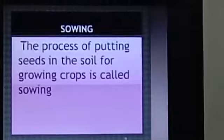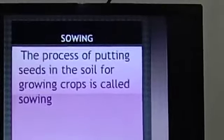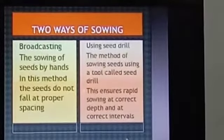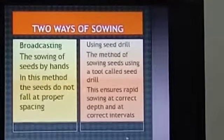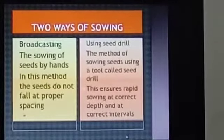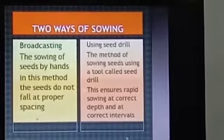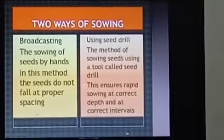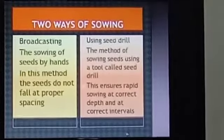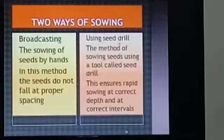Number one is broadcasting, or simply scattering by hands. In this method, seeds do not fall at proper spacing. That means in some places there will be more number of seeds and in some places very less number of seeds.